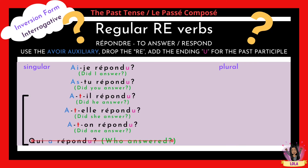As-tu répondu: did you answer? A-t-il répondu, a-t-elle répondu, a-t-on répondu — notice I've added the letter T in between the auxiliary and the subject, because they both start with vowels; that's a rule you have to follow. And qui a répondu is already a question, so we can't do a flip on that one.